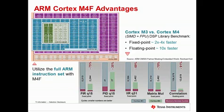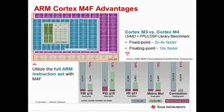To elaborate on the Cortex-M4F ARM instruction sets, you'll see that Cortex-M4F includes the full ARM instruction set compared to M4, M3, or M0+. This allows you to perform your operations more efficiently. You'll also see that a Cortex-M4F can process fixed-point operations twice as fast as an M3, and over 10 times faster for floating-point operations than an M3.